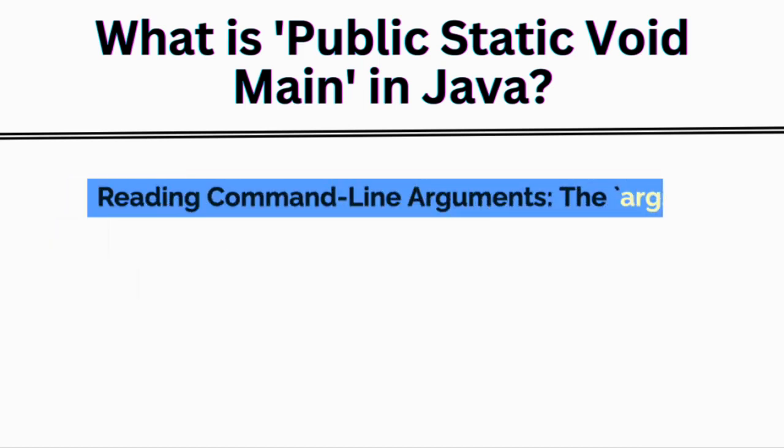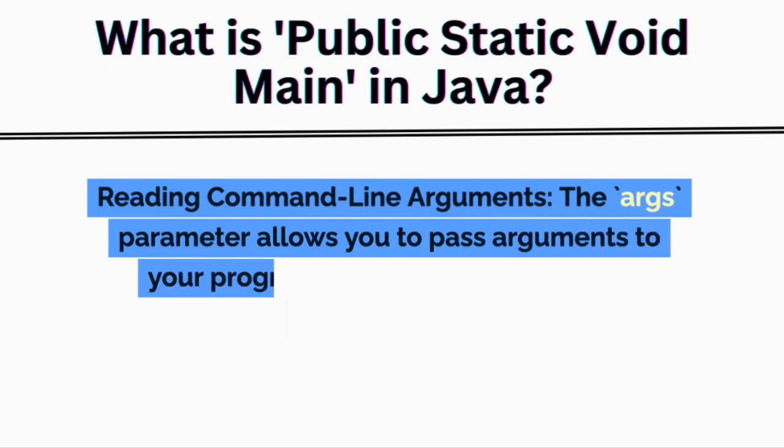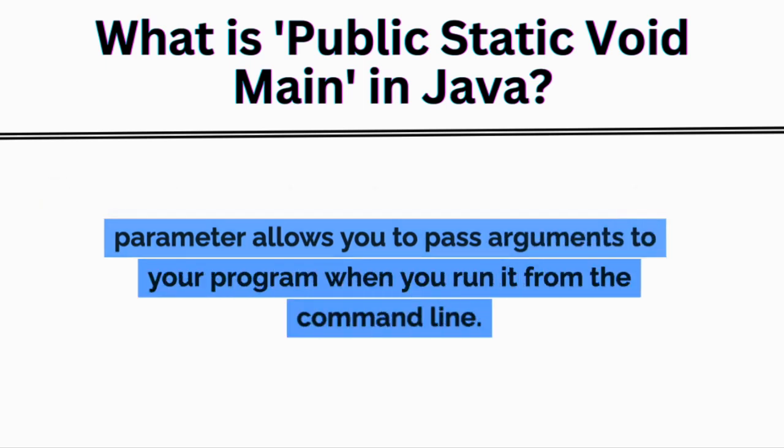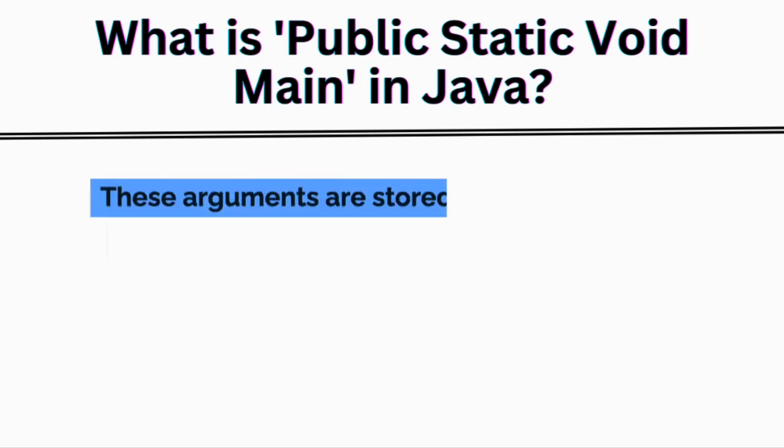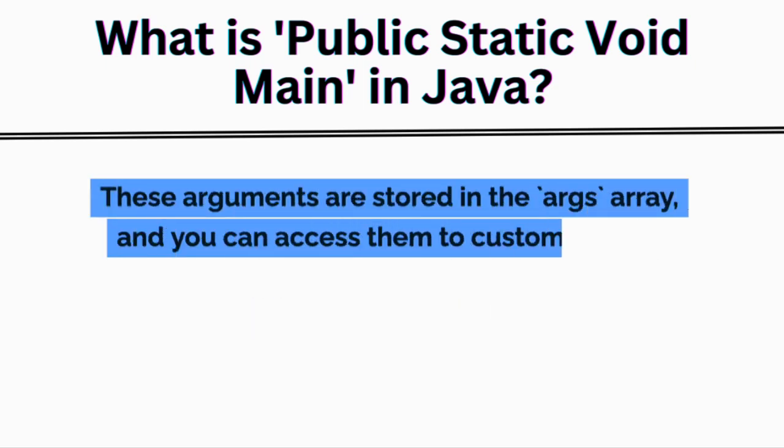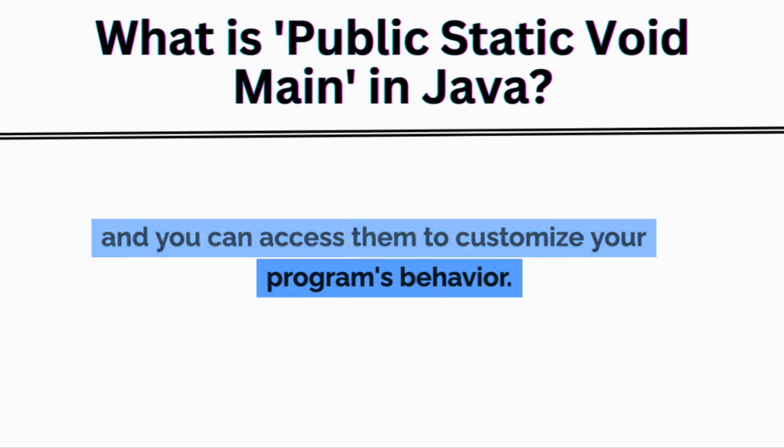Reading command line arguments: the args parameter allows you to pass arguments to your program when you run it from the command line. These arguments are stored in the args array, and you can access them to customize your program's behavior.